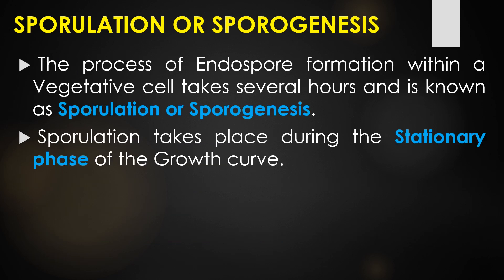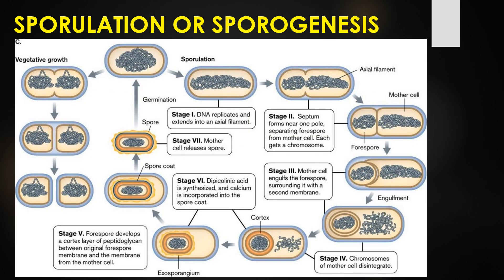The process of endospore formation within the bacterial vegetative cell takes several hours and is known as sporulation or sporogenesis. Sporulation takes place during the stationary phase of the growth curve. The sporulation cycle contains seven stages.